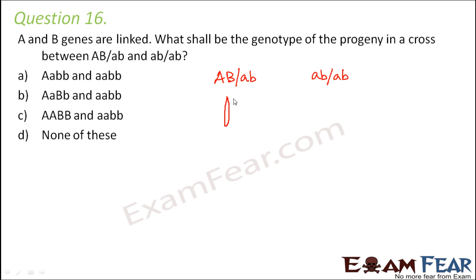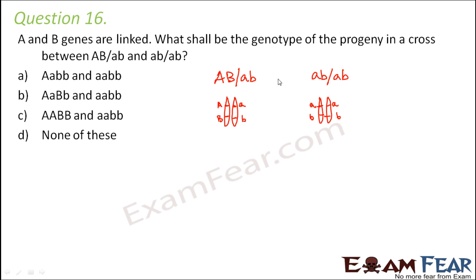So this basically means something like this — if these are the homologous chromosomes, one has capital A capital B, and the other has small a small b. In the second parent, both chromosomes carry small a small b. Now when you cross these two, the possible gametes from the first parent are capital AB and small ab, and from the second parent, only small ab.